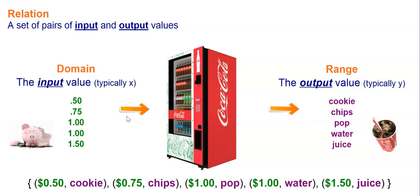The output of the relation is called the range. These are all the values that come out of the relation. In the case of the vending machine, that would be the cookie, the chips, the water, the juice. It's what comes out of the vending machine. Again, when we talk about relations in a math class, this is typically y.